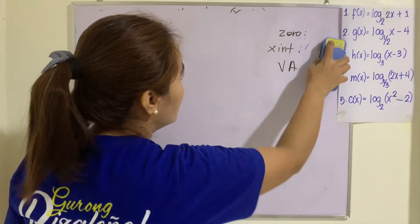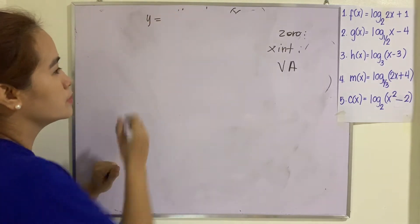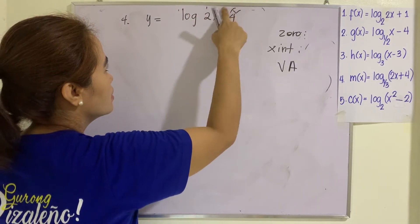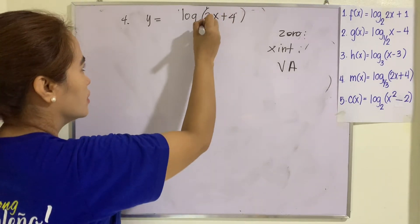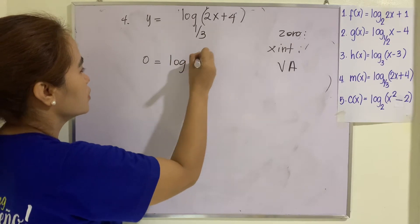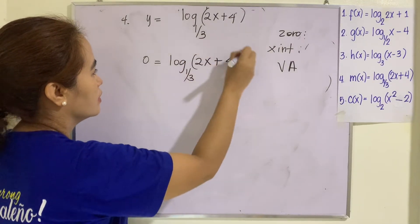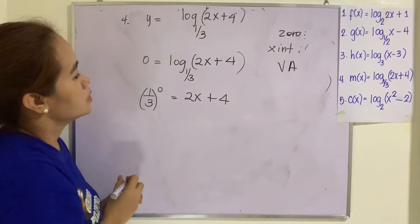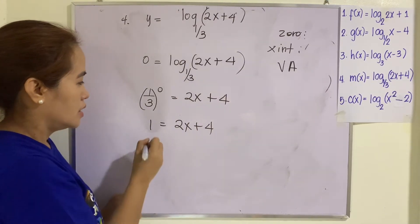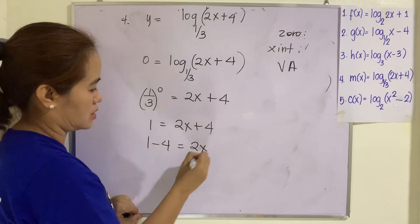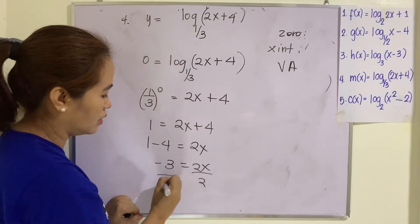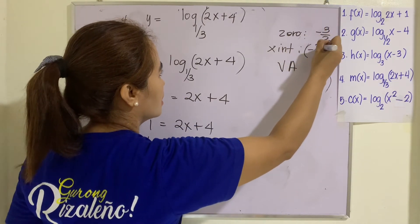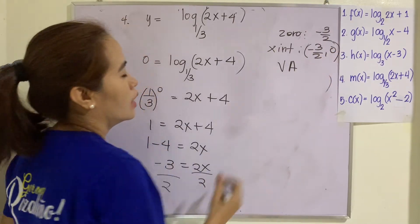Number 4: y equals log of (2x plus 4) to the base 1/3. Setting y to zero: 0 equals log of (2x plus 4) to the base 1/3. Changing to exponential: (1/3)⁰ equals 2x plus 4, so 1 equals 2x plus 4. Then 1 minus 4 equals 2x, giving negative 3 equals 2x, so x equals negative 3/2. That is our zero, and the x-intercept is (−3/2, 0).